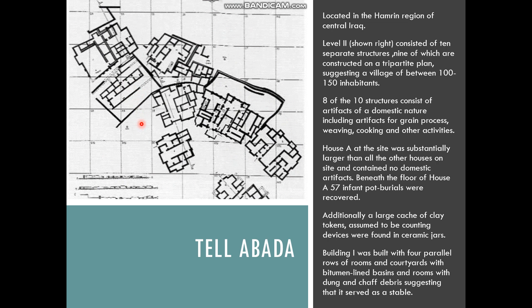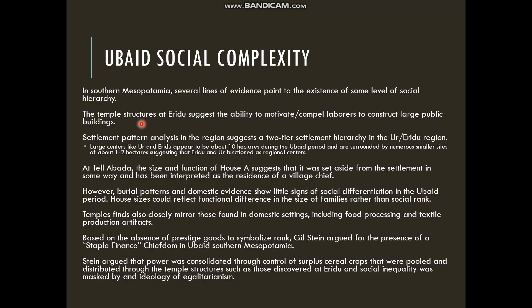We can start to look at sites like Tal Abadah and Eridu as showing us the codification of these types of leadership positions. The question then becomes: what exactly is the role of that leadership? If we look at the correlates of complexity for the Ubaid in southern Mesopotamia, there are several lines of evidence pointing to some level of social hierarchy.